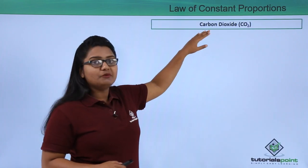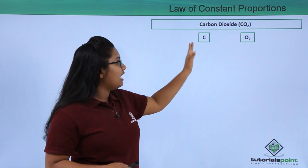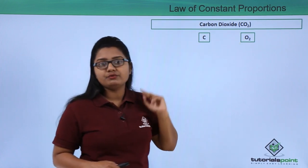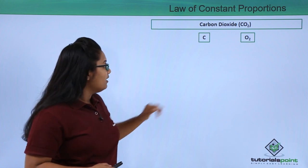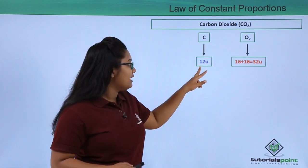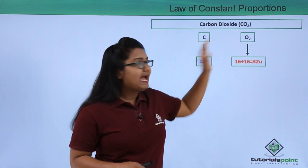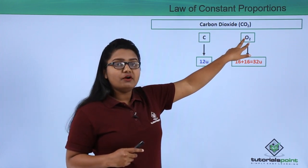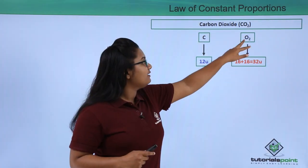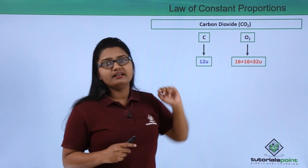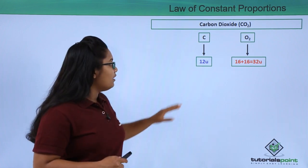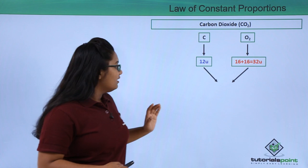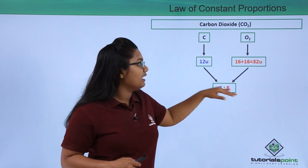Let us see more examples. Carbon dioxide has one carbon atom and one oxygen molecule (two oxygen atoms). One carbon atom weighs 12u, and one oxygen atom weighs 16u. With two oxygen atoms in the molecule, oxygen contributes 16 + 16 = 32u. The ratio of carbon to oxygen is therefore 12:32, which simplifies to 3:8.